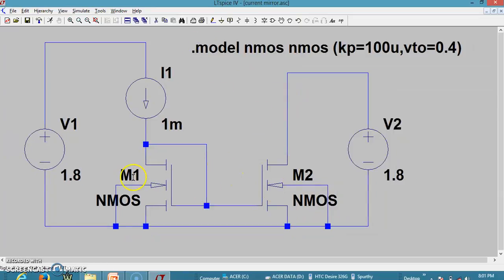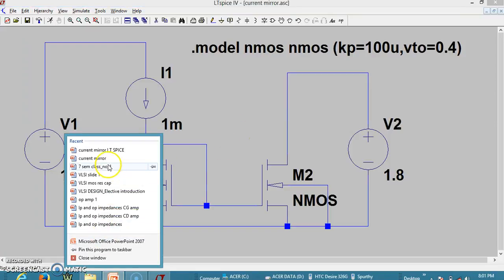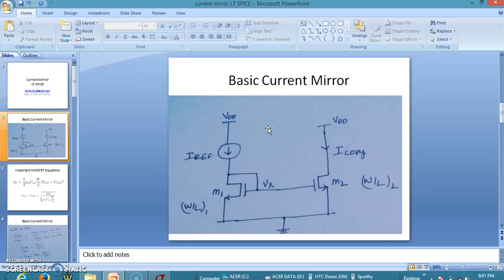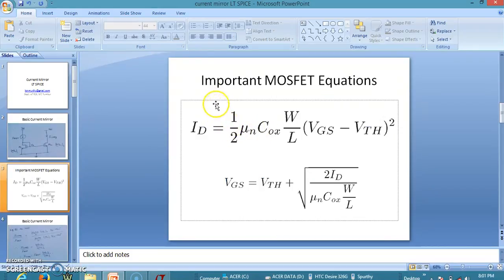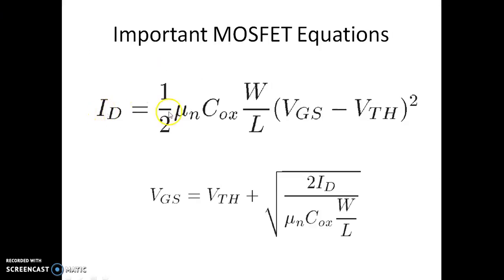Let me take the model file and type: dot model nmos nmos, with kp equal to 100u and vto equal to 0.4. Now we have made the dimensions of both M1 and M2 equal to 250. Using the equation, ID equals half times mu_n*Cox times W/L times (VGS minus Vth) squared, we can estimate VGS. VGS equals Vth plus square root of 2*ID divided by (mu_n*Cox times W/L). With W/L as 250, ID as 1 milliampere, Vth of 0.4V, and mu_n*Cox of 200, we can find the expected VGS.